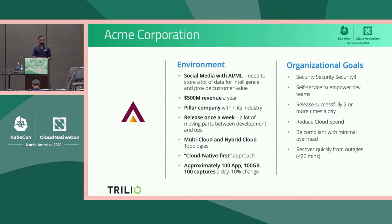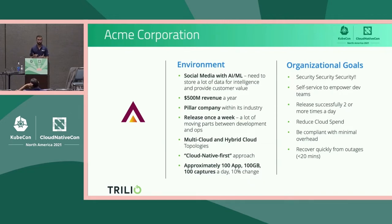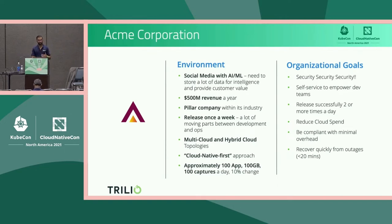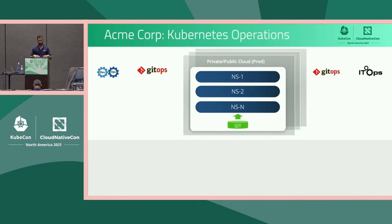What are the goals of this organization? Security is number one — wherever you put your data or infrastructure, you want to make sure it's very secure. They want to ensure more self-service to empower development teams. They want to release more often — at least two or more times a day — which will have a direct impact on revenue. They want to reduce their cloud spend, be compliant with minimal overhead, and obviously recover very quickly from outages. So let's keep the environment in mind: 100 apps, 100 GB, 100 captures a day, and these organizational goals. Now we'll start constructing how Acme is working on a Kubernetes platform and what are the painful points they're looking to solve.